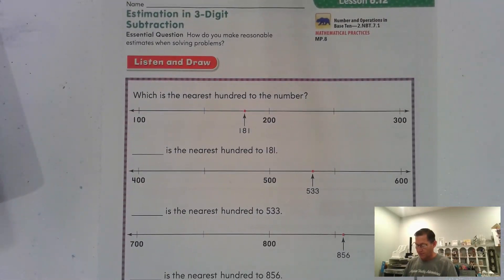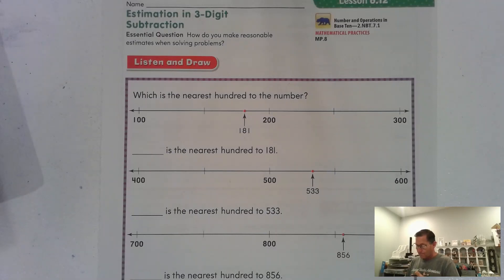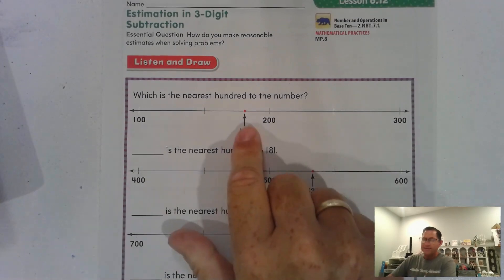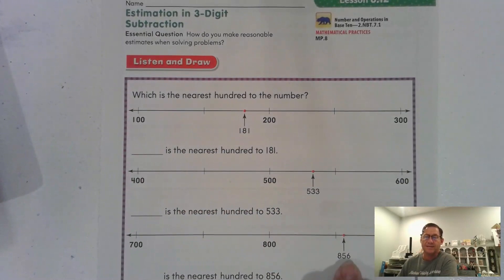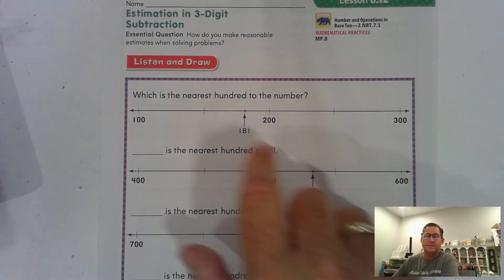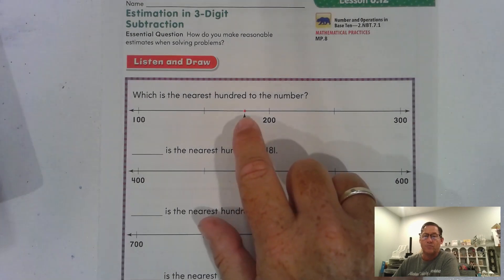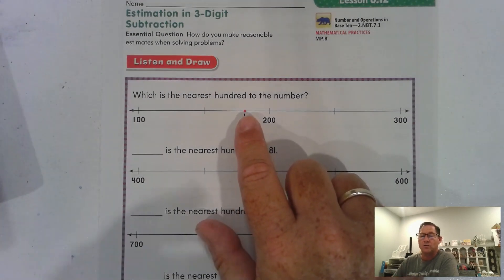For each number line, look at the number line with the arrow, and I want you to tell me which hundred the arrow and the dot is closest to.